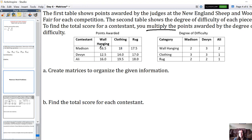We're just going to keep each row the same and each column the same. So our first matrix for the first table, we've got 16.5, 18, and 17.5. That's Madison's score from each different competition. Then Devon's score, we've got 12.5, 14, 17. And then Allie, 16.0, 19.5, 18.0.